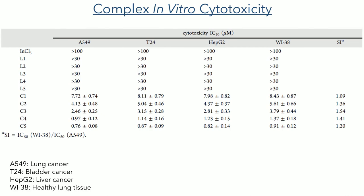These compounds were initially screened in a number of cell lines: A549, which is a lung cancer cell line; a bladder cancer line, T24; a liver cancer cell line, HEPG2; and finally healthy lung tissue, Wi38 cells. Neither the ligands nor indium trichloride showed significant activity in these cells. However, all of the metal complexes showed good activity, with the C5 complex — which had two methyl groups on the terminal nitrogen — showing an IC50 value of just 0.76 micromolar in A549 cells, with a selectivity index of 1.2 when compared to Wi38 cells.